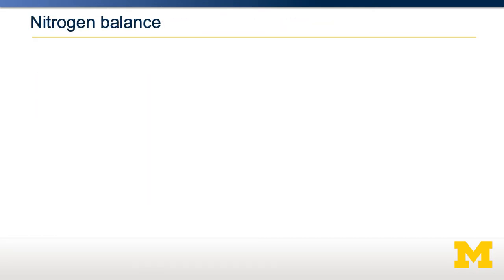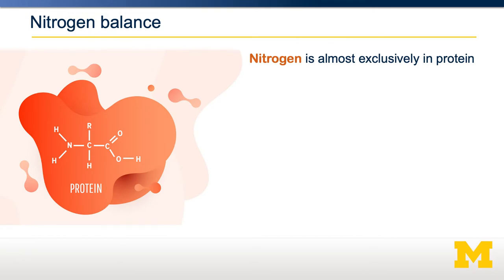Let's talk about nitrogen balance first. Nitrogen is an atom that is almost exclusively present in protein. It's present in small amounts in fat and sometimes in carbohydrates, but it's present in every single amino acid. Therefore, on balance, if we determine whether or not somebody's nitrogen intake matches their nitrogen excretion, we can determine whether their protein intake is sufficient.